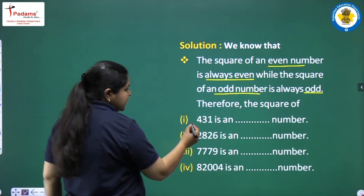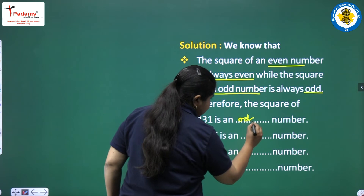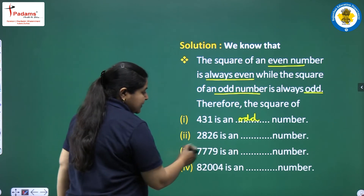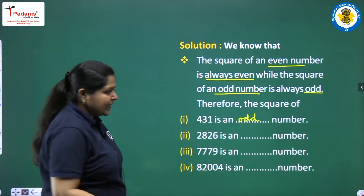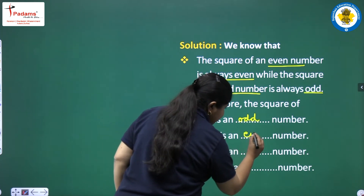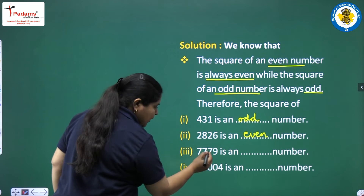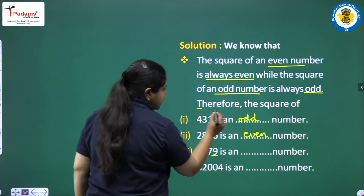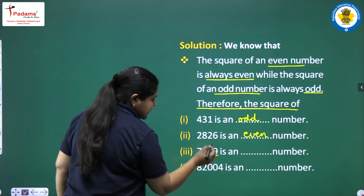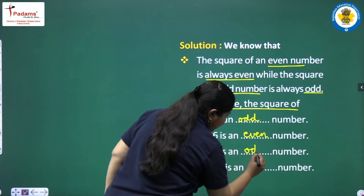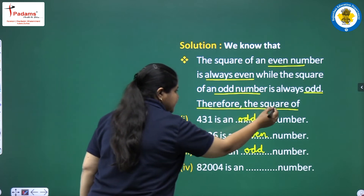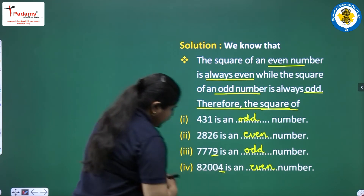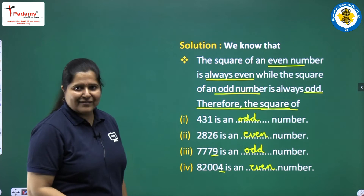Therefore, the square of 431 is an odd number because 431 is itself an odd number, so its square is also odd. 2826 is an even number, so the square of this number is an even number. 7779 is again an odd number, so the square of 7779 is an odd number. And similarly, the square of 82,004 is an even number because it is an even number itself.